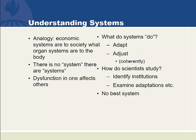Let's try to understand systems using an analogy: economic systems are to society what organ systems are to the body. There are multiple systems, not one system, and dysfunction in one affects others. If we ask what do systems do, they adapt and adjust coherently.